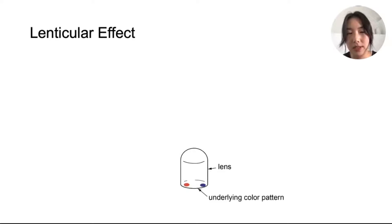For example, this particular lens has a red dot on the left side and a blue dot on the right side.